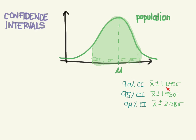So if we wanted a 90% confidence interval, we'd have to use 1.645. If we wanted a 99% confidence interval, then we'd use 2.58 times the standard deviation.